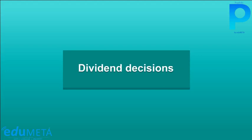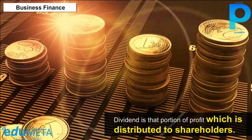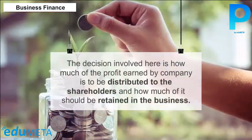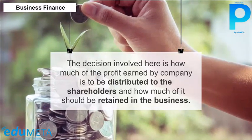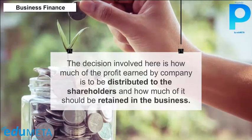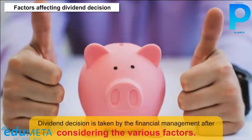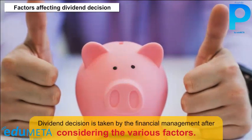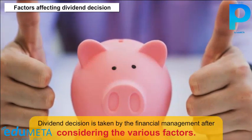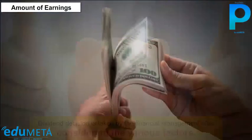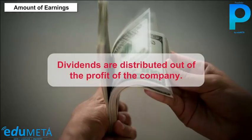Dividend Decisions: Dividend is that portion of profit which is distributed to shareholders. The decision here involves how much of the profit earned by the company is to be distributed to shareholders and how much should be retained in the business. Dividend decisions are taken by financial management after considering various factors, including the amount of earnings — dividends are distributed out of the profit of the company, so earnings are a major determinant.